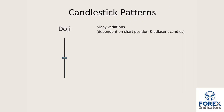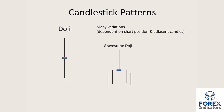Now there are many variations of the doji. One is a gravestone doji, where the candle has pushed up into an upper high, come back down and closed more or less where it opened. The gravestone doji you will see at the top of price action. The single lines either side of it are just indicating candles of any form that are printed before and after the actual candle pattern we're discussing.